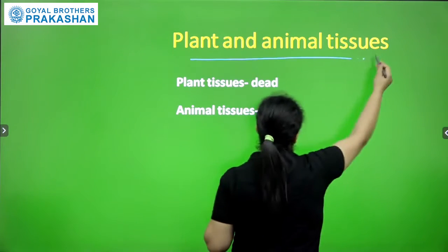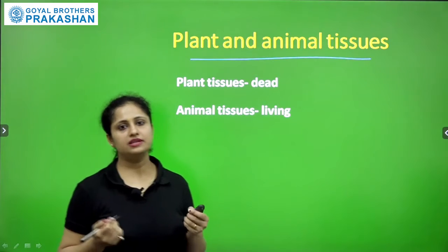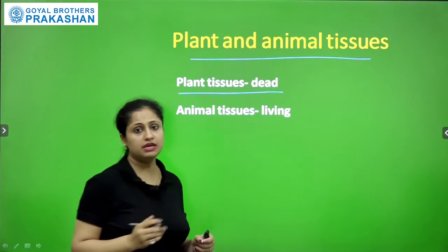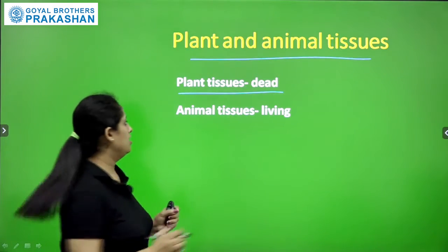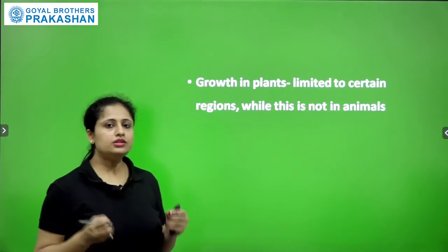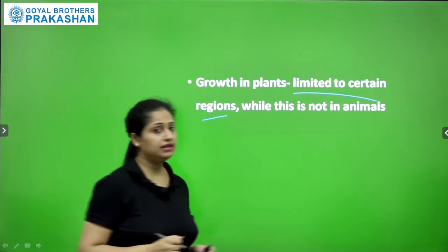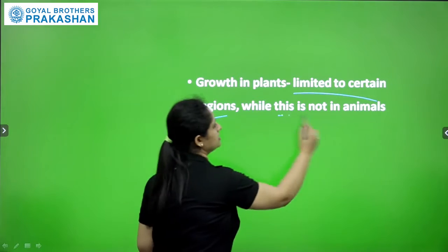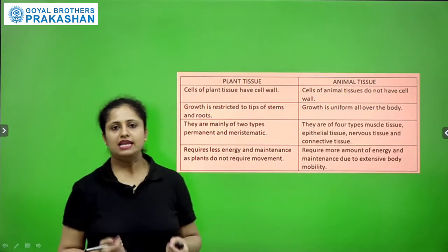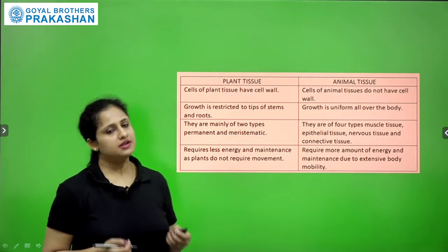Plant and animal tissues. Tissues in both plants and animals are of different types. Plant tissues are majorly dead, while animal tissues are living. The growth in plants is limited to certain regions, while in animals it is not limited to certain regions. Now let's see how plant and animal tissues differ.